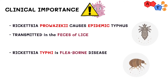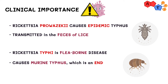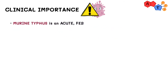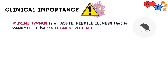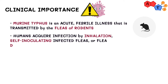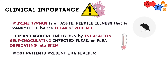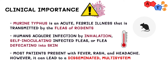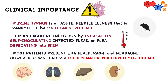Rickettsia typhi is a flea-borne disease, best known as the causative agent of murine typhus, which is an endemic typhus in humans distributed worldwide. Murine typhus is an acute febrile illness mainly transmitted by the fleas of rodents. Humans acquire infection by inhalation, or by self-inoculating infected flea feces into skin when they visit disease-endemic areas infested with rats. Most patients present with fever, and many have a rash and headache, although it can also lead to disseminated multisystemic disease, including infections of the brain, lung, liver, kidney, and heart endothelium.